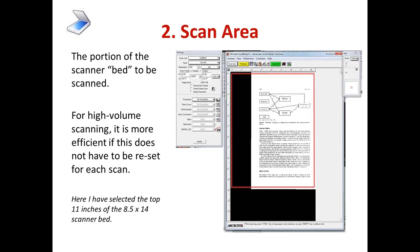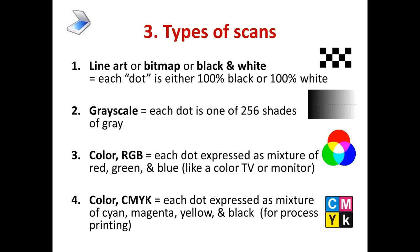Second is the scan area — that's the portion of the scanner bed you're going to scan. You don't have to scan the whole bed each time. For high-volume scanning, it's more efficient if you don't have to reset the scan area for each scan — just turn the page and hit scan again. Here I've selected the top 11 inches of an 8.5 by 14 scanner bed. There are types of scans. First is line art, also known as bitmap, also known as black and white or monochrome — each dot is either 100% black or 100% white with no in-between.